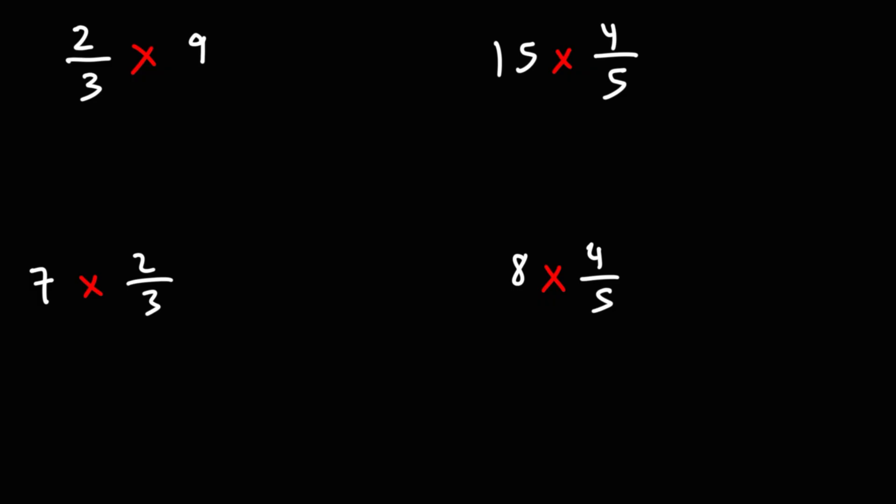So in the first example, we have 2 thirds times 9. What you want to do is rewrite the 9 as a fraction. So you want to put it over 1, and then you can multiply across.